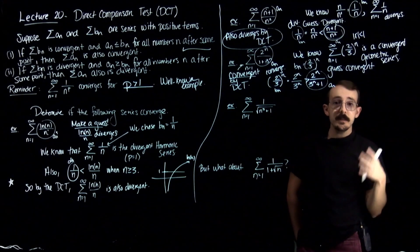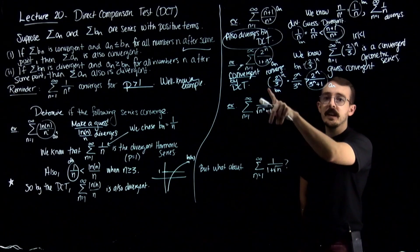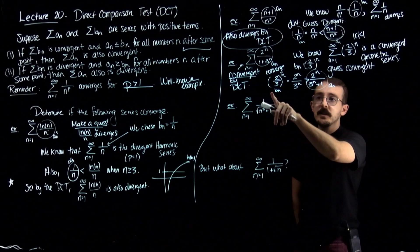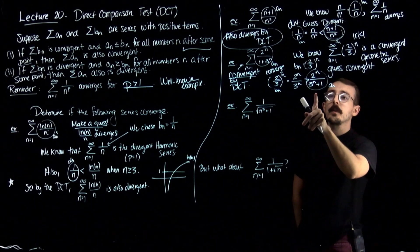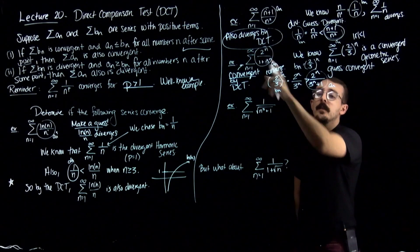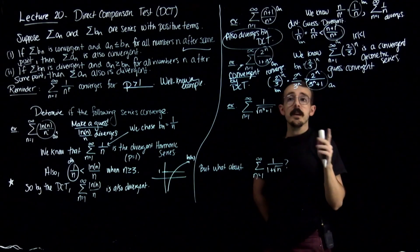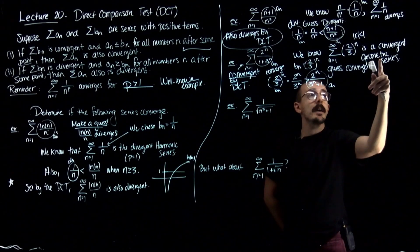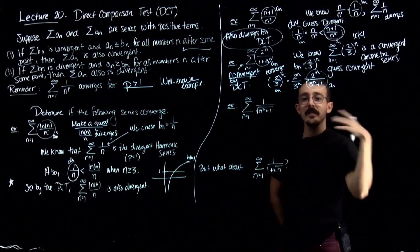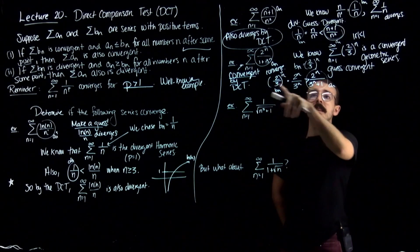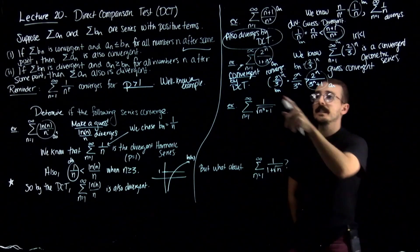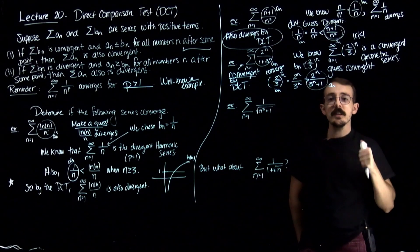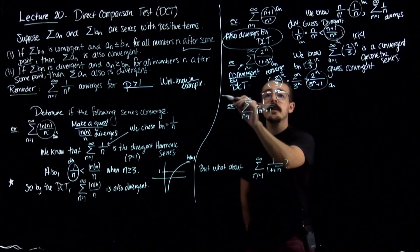The work you need to show — especially on a free response — is how you get from the series you chose to the one you're looking for. Your goal is always to arrive at the series in question. First state why the series you chose is convergent or divergent, then show the inequality, and finally conclude using the Direct Comparison Test. Give reasons for all steps and write them out clearly.